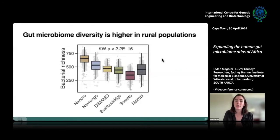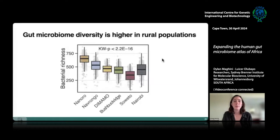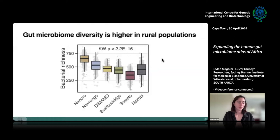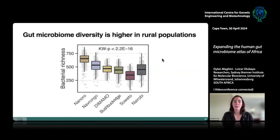Something interesting was that richness in Nairobi was a little more intermediate — despite Nairobi being our highest density, most urban population. This gives us some insight into the demographics and lifestyle of individuals living in those informal settlements. They might practice more migration between Nairobi and rural villages, may have more recently migrated, or may be retaining diets more similar to what individuals in Nanoro and Navrongo are eating.